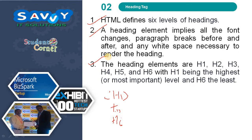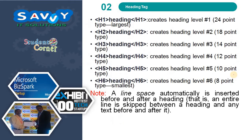h1 heading creates heading level 1 at 24-point type (large). h2 is 18-point, h3 is 14-point, h4 is 12-point, h5 is 10-point, and h6 is 8-point. Note: a line space is automatically inserted before and after each heading.